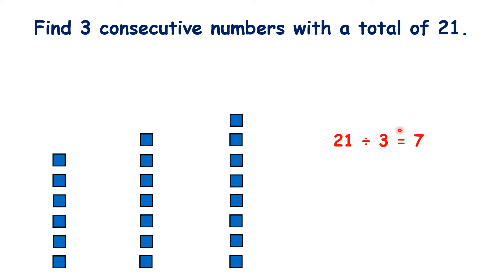So our numbers are 6, 7 and 8. After dividing by 3, we can get our answer by taking one away to get the number we start with, then adding one to get our final consecutive number.